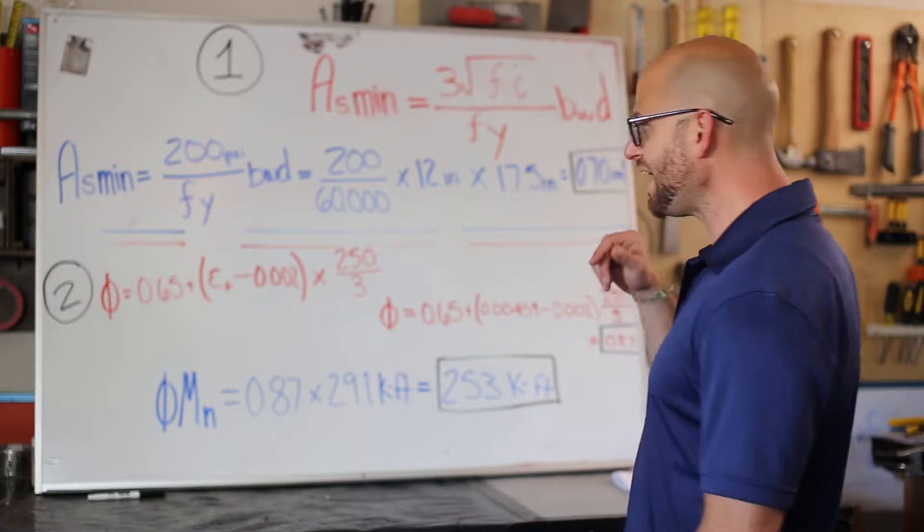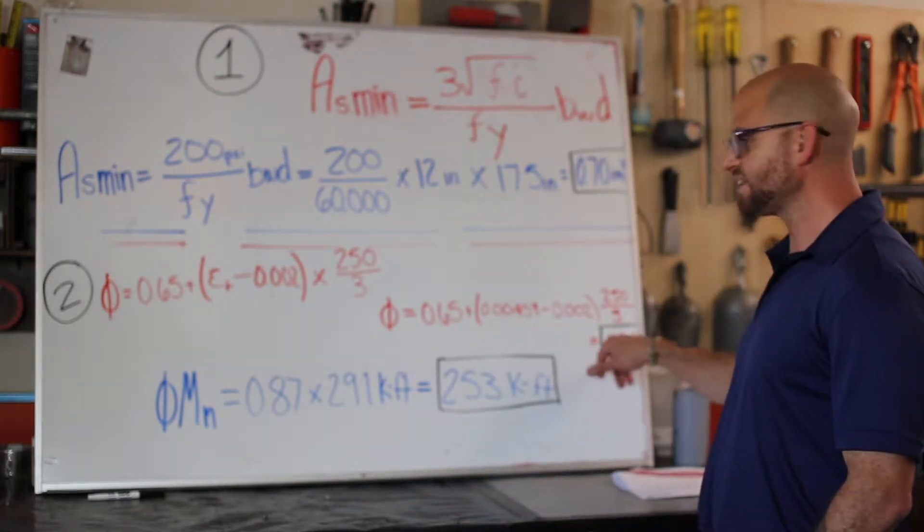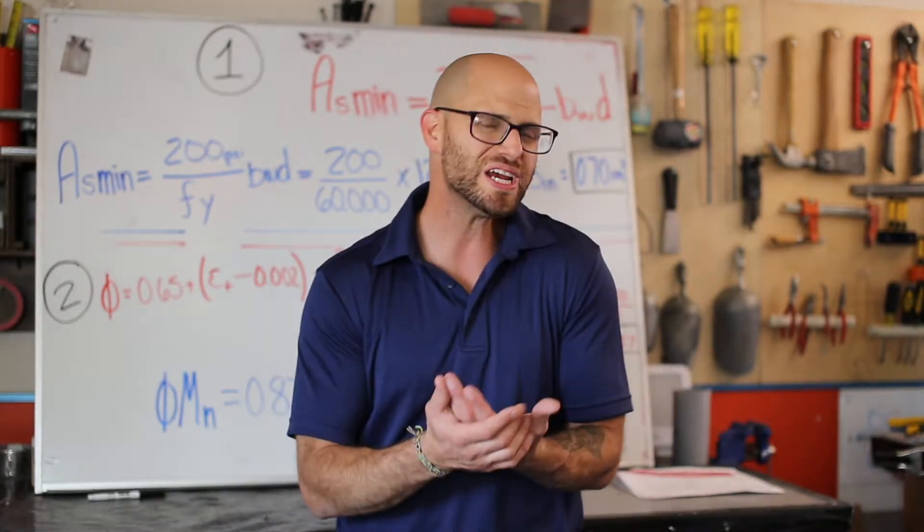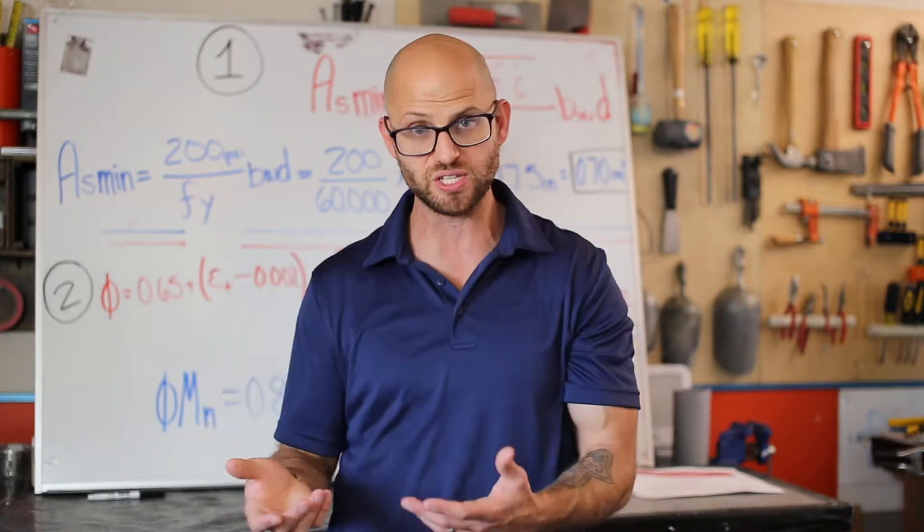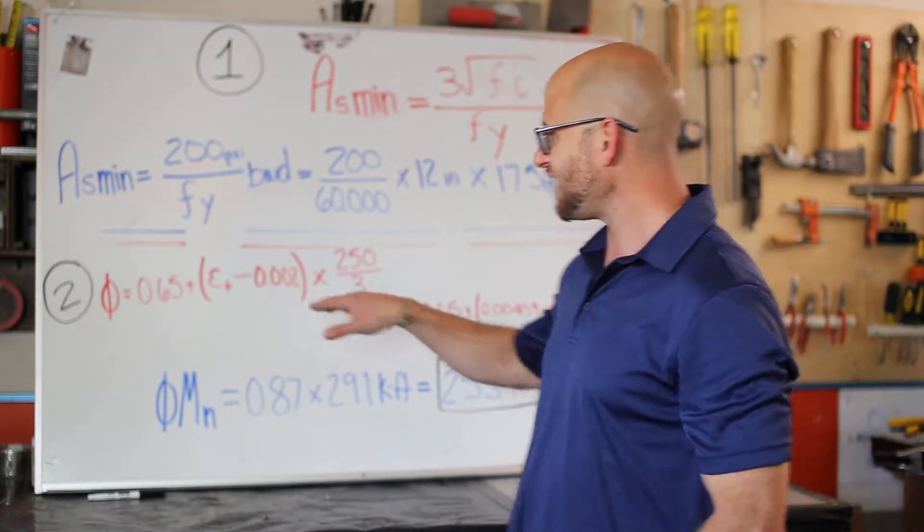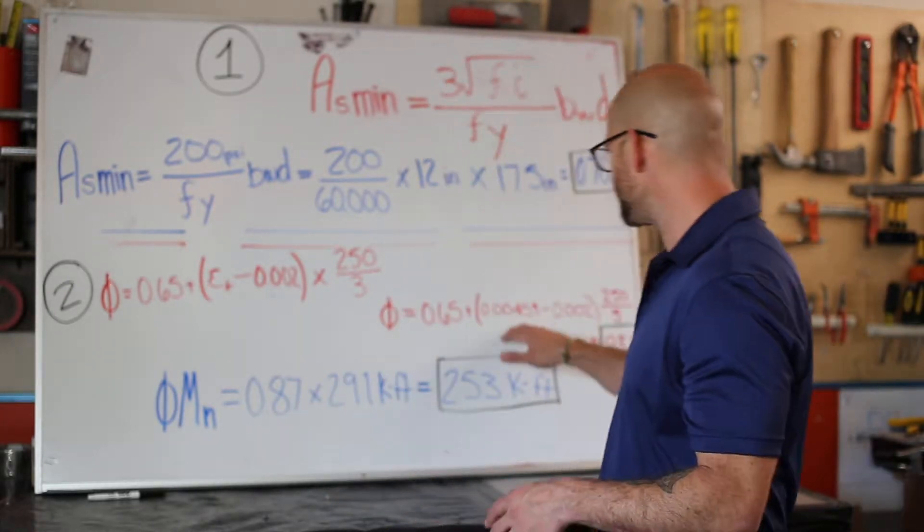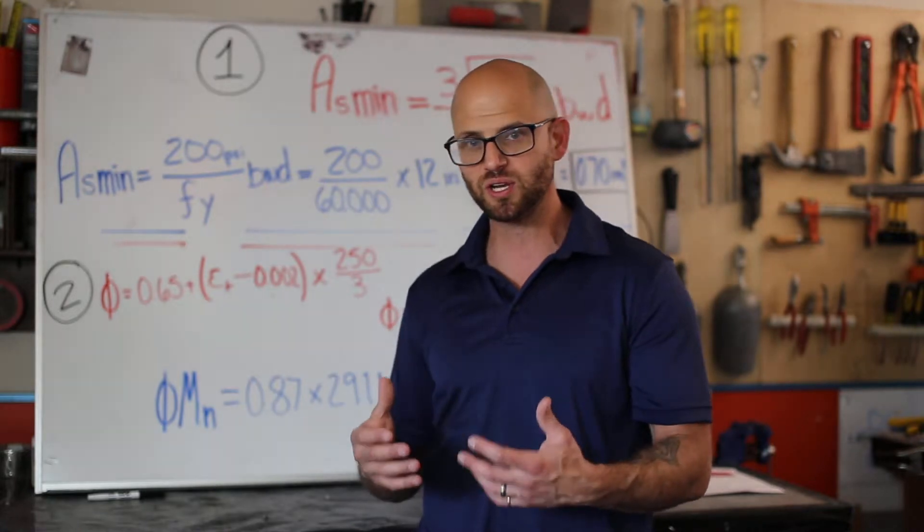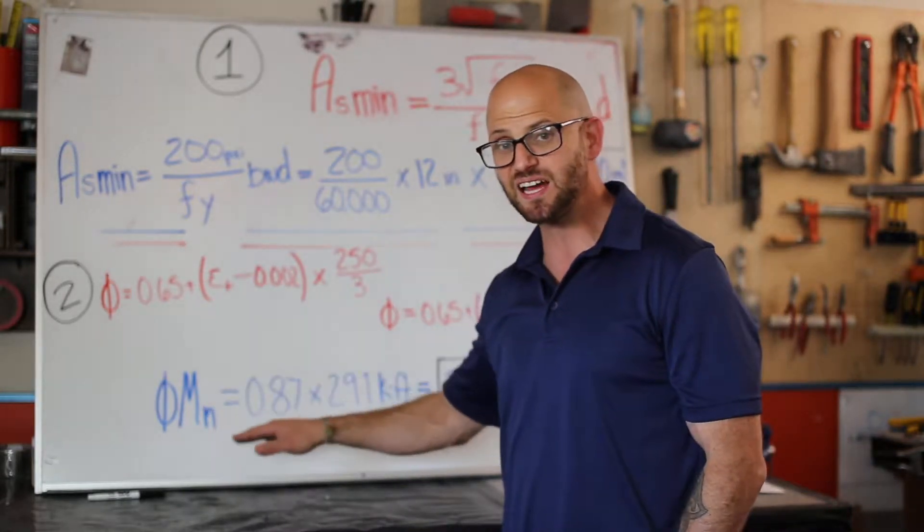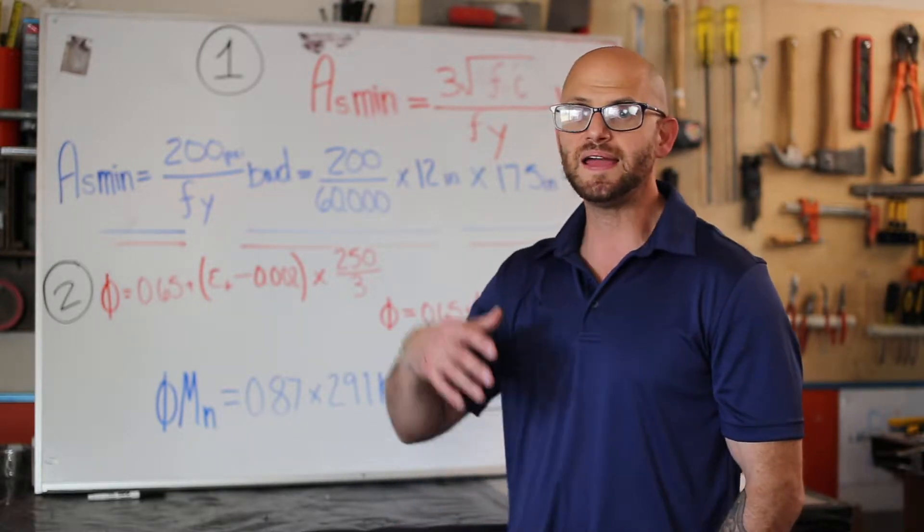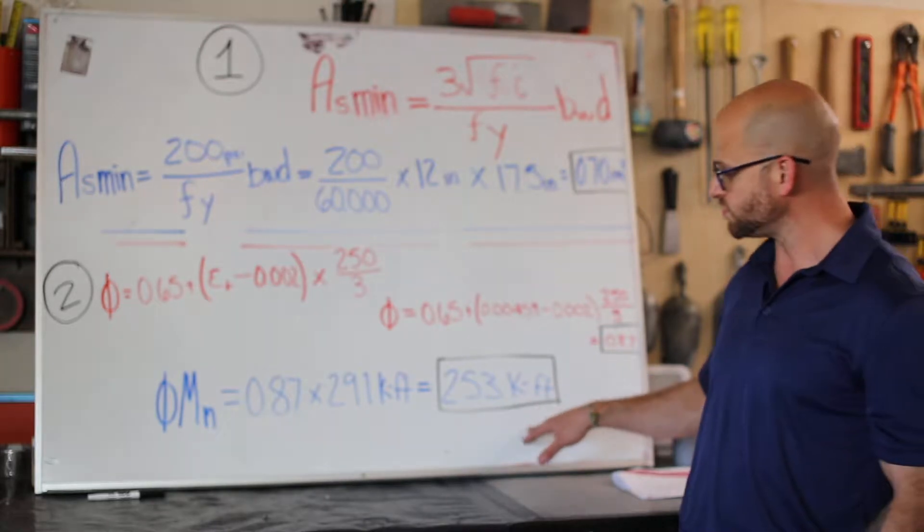We find out that our strength reduction factor φ = 0.87. What's crazy is that it's not that much of a strength reduction compared to the original 0.9 if we're in a tension zone. That failure strain is 0.00459, right on the edge of that tension zone which is 0.005. Using that strength reduction factor, we multiply it by the capacity of the beam to get a design capacity. We take 0.87 times 291 kip-feet to give us what we can use as 250 kip-feet.